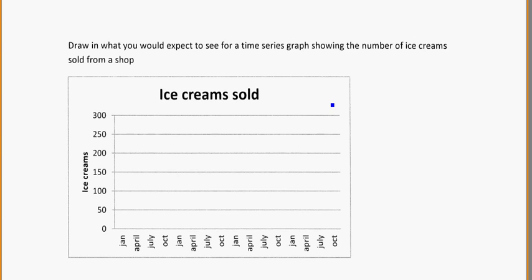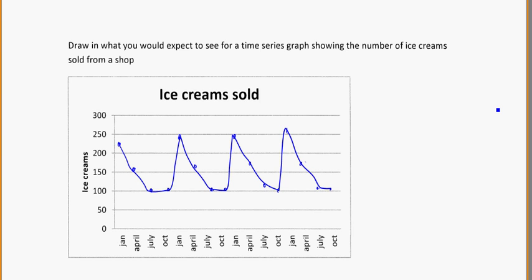One thing I'd like you to do for a bit of fun is draw what you'd expect to see for a time series showing the number of ice creams sold from a shop. Think about what's going on with January, April, July, October — looking at it in quarters. Where would you expect the ice cream sales to be? You can draw your own graph; it doesn't have to be perfect. Generally we'd expect ice cream to be sold more in the summer than in the winter. That's just a guess — it depends on the shop, the country, and all sorts of factors. But if sales are higher in summer and lower in winter, that could be what the graph looks like. In the seasons, it will vary.